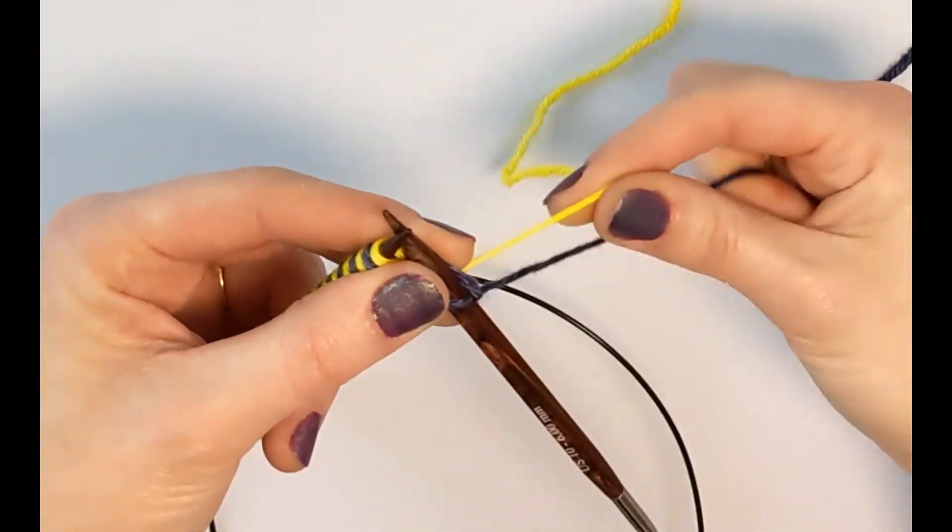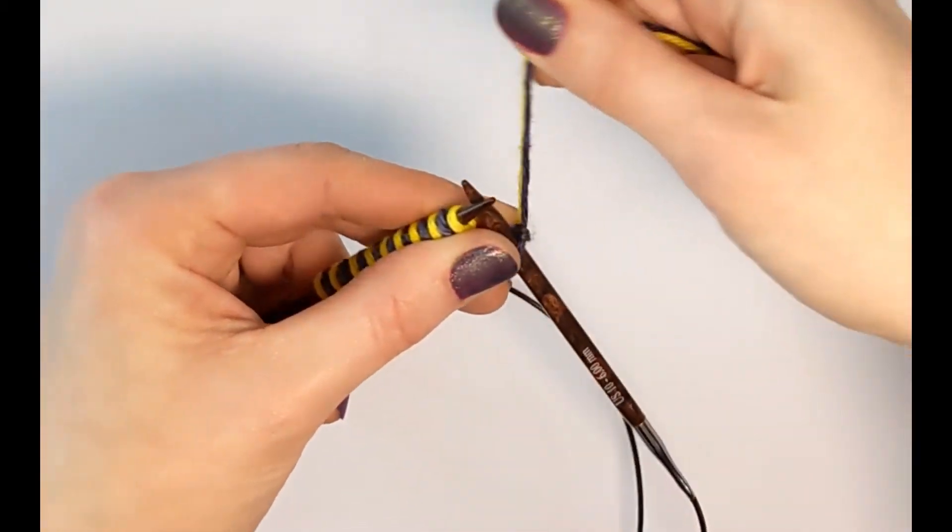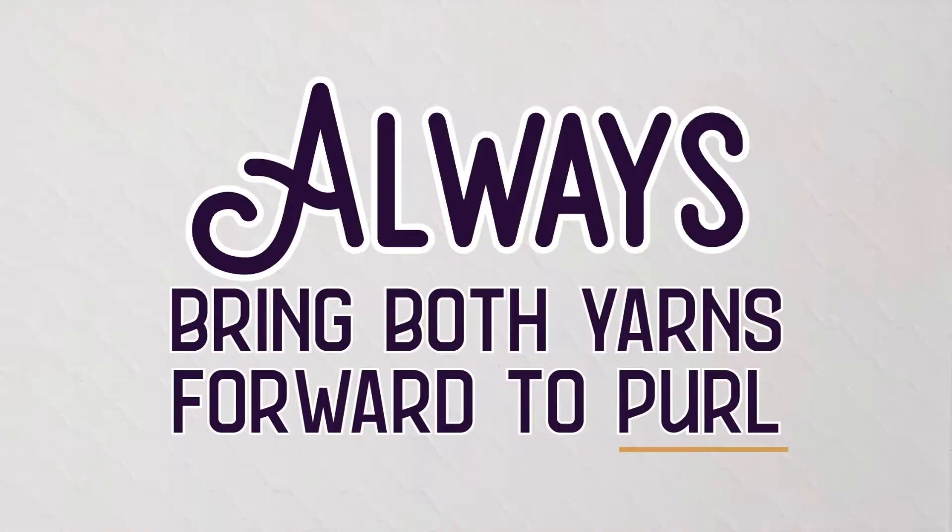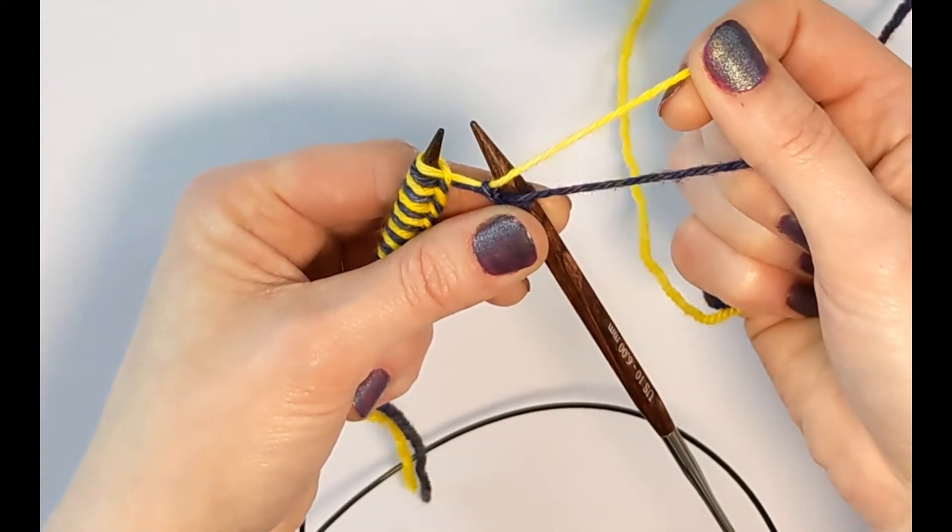Next, I'm going to bring both yarns forward. Always bring both yarns forward before you purl. Then, I'll purl with the yellow yarn.